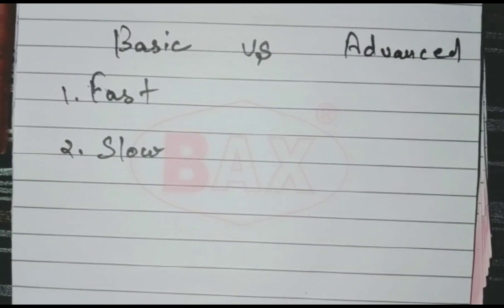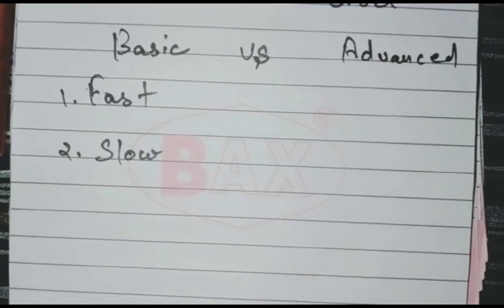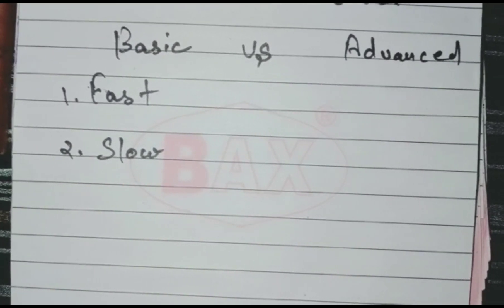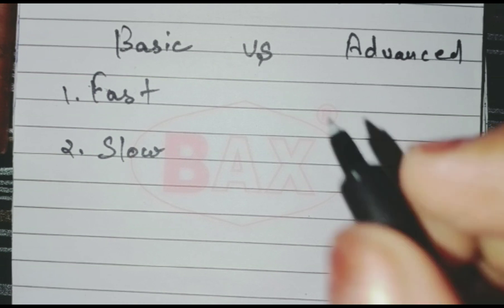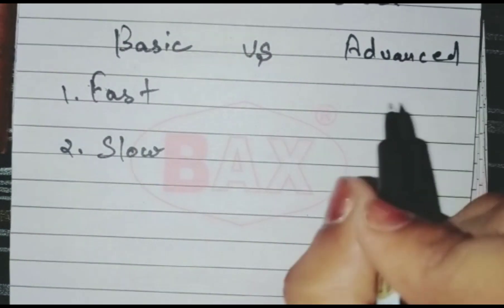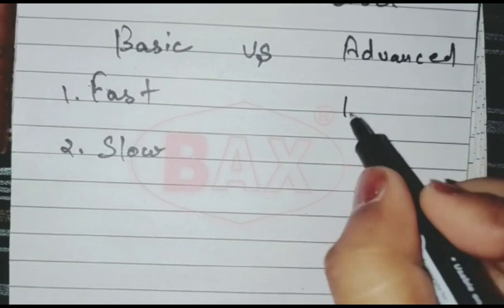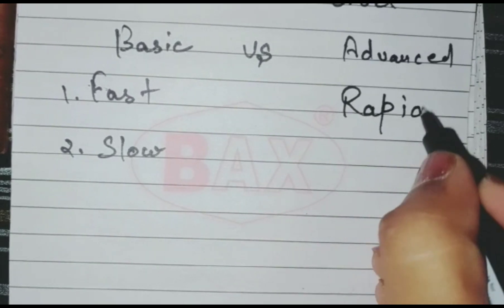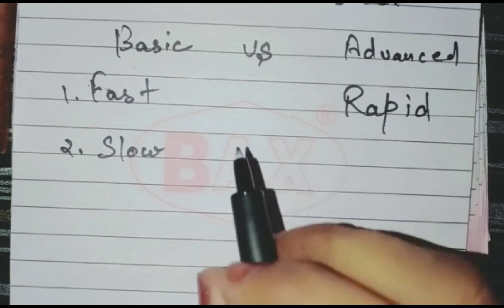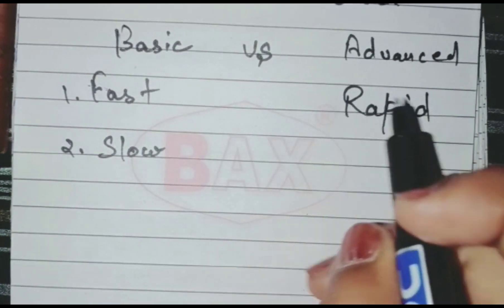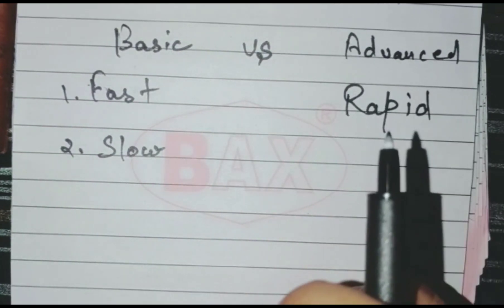Hey there, welcome back to my channel. Today we're looking at basic versus advanced words. The first pair is 'fast' — a more advanced word for fast is 'rapid.' For example: the train was moving at a rapid speed.